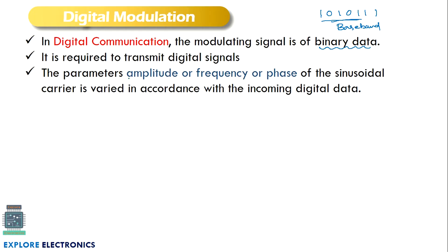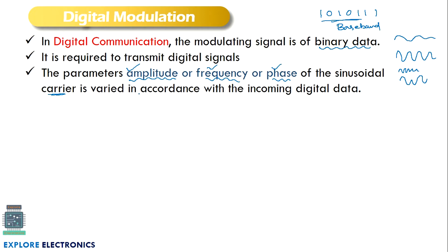The parameters we can alter are the amplitude, frequency, or phase of the carrier signal, varied in accordance with the incoming data. Just as in analog modulation we varied amplitude, frequency, and phase with the message signal, here similarly we vary those same parameters. Note that here we are using a sinusoidal signal as the carrier wave.